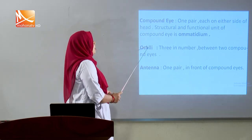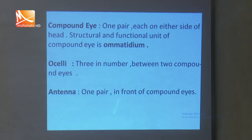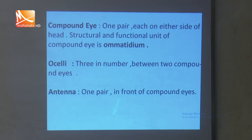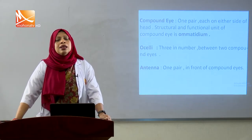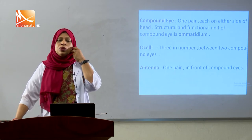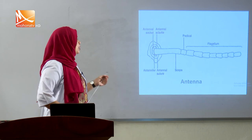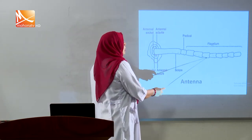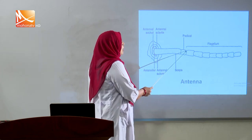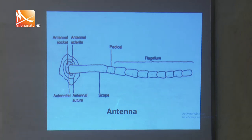There are three ocelli between the two compound eyes. Ocelli are simple eyes — they have light-sensitive cells, a transparent lens, and photoreceptor sensitivity. In front of the compound eyes there is a pair of antennae. Antenna is sensitive to touch, smell, and can detect sound waves. The antenna consists of scape, pedicel, and flagellum. The pedicel is the smallest and unsegmented part, and the flagellum is the largest portion, composed of about 25 segments.